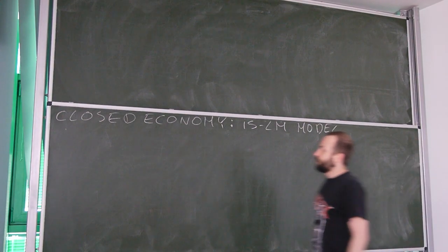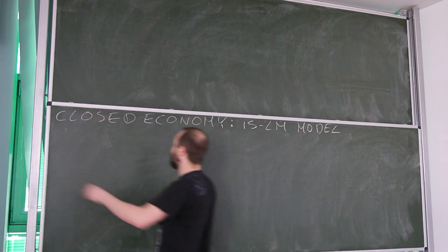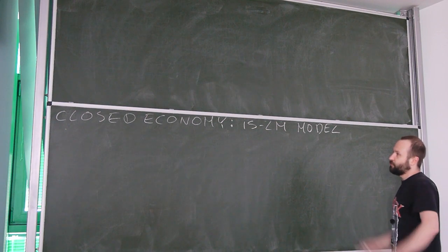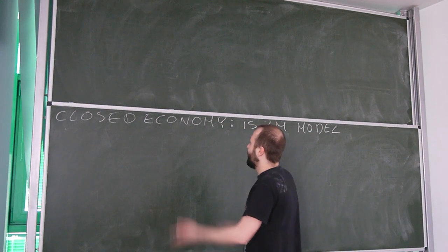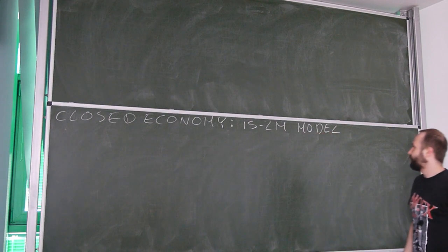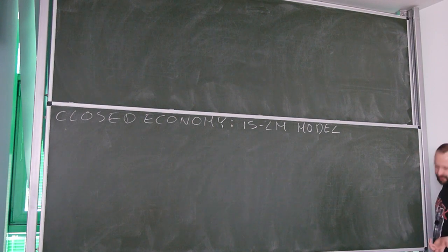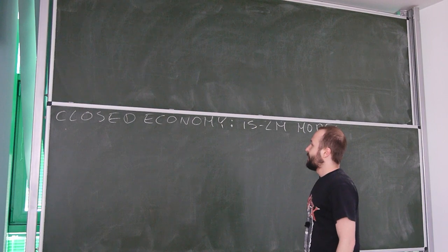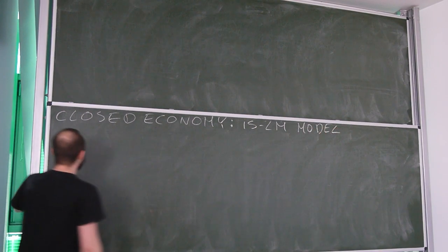Hi everyone, today we are going to integrate the market for goods and services with the money market within a closed economy framework, and we're going to use the IS-LM model that you've discussed in your macroeconomics class.